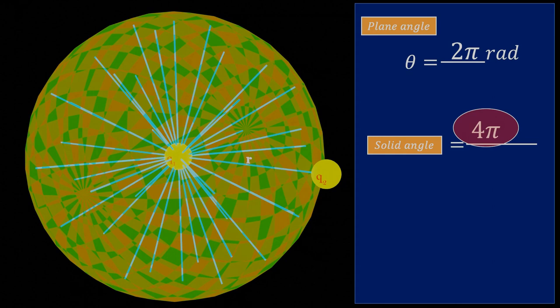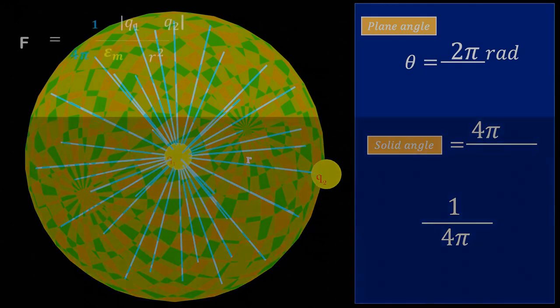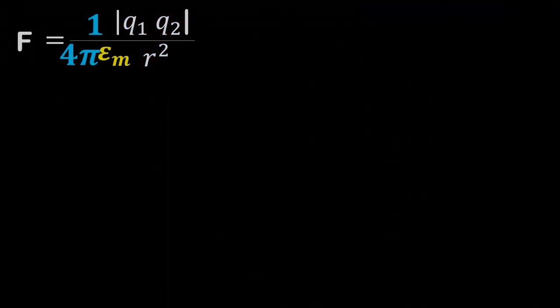However, if we look closely, a point charge q1 can only affect another point charge q2 through the one possible electric field line out of the 4π possible field lines. This is why we use 1 upon 4π in the formula of electrostatic force.